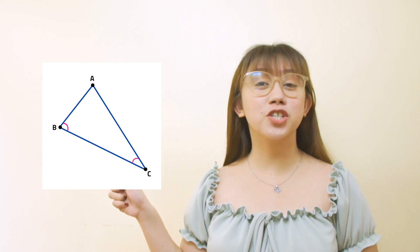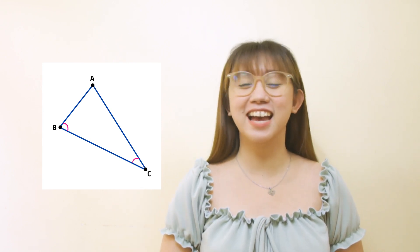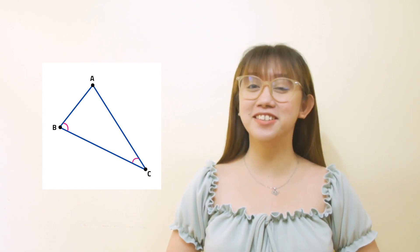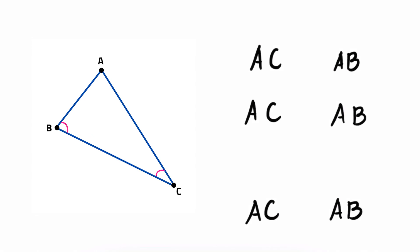Consider the triangle for which angle B is greater than angle C. We have to show that side AC is greater than side AB. Using the greater angle or greater side theorem, if two angles of a triangle are unequal, then the greater angle has the greater side opposite to it. AC cannot equal AB, since then angle B would equal angle C. Similarly, AC cannot be less than AB, since then angle B would be less than angle C. Thus the only possibility is that side AC is greater than side AB.